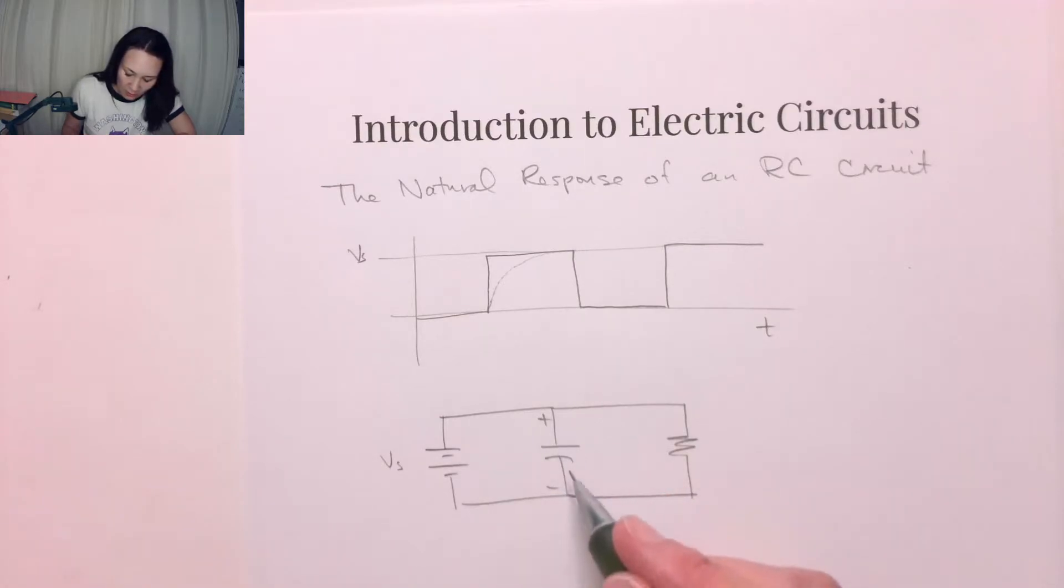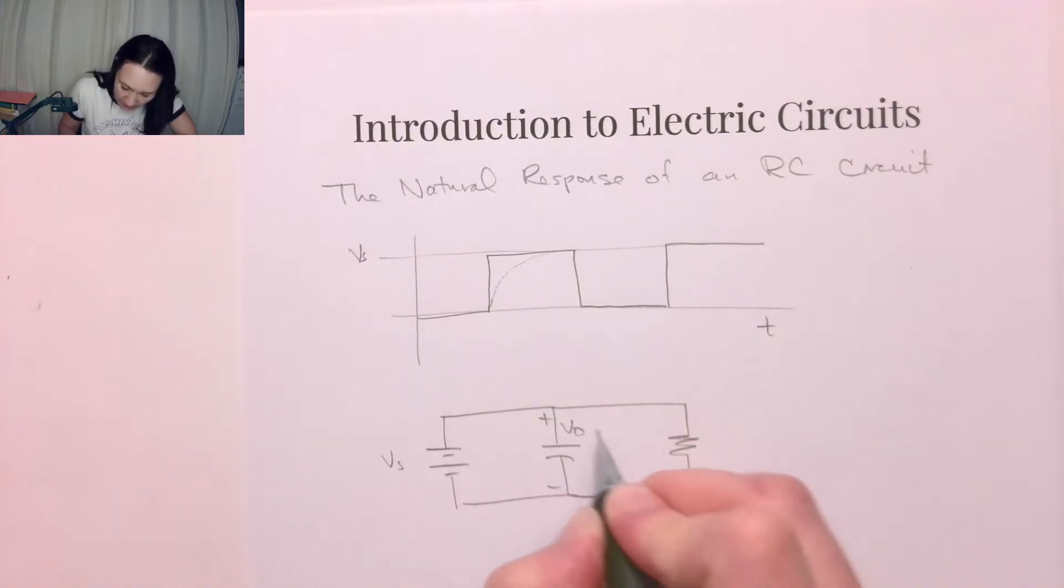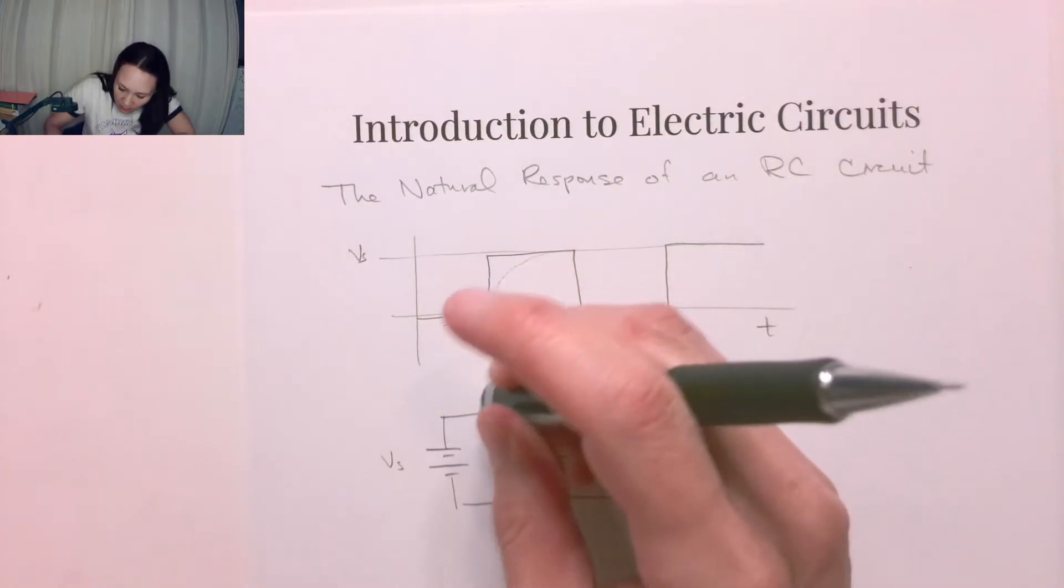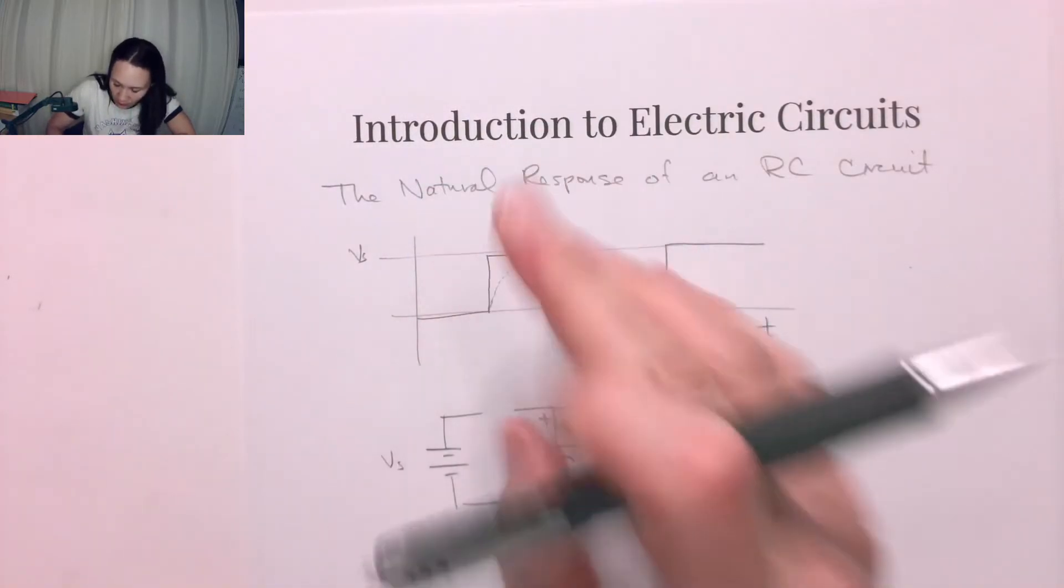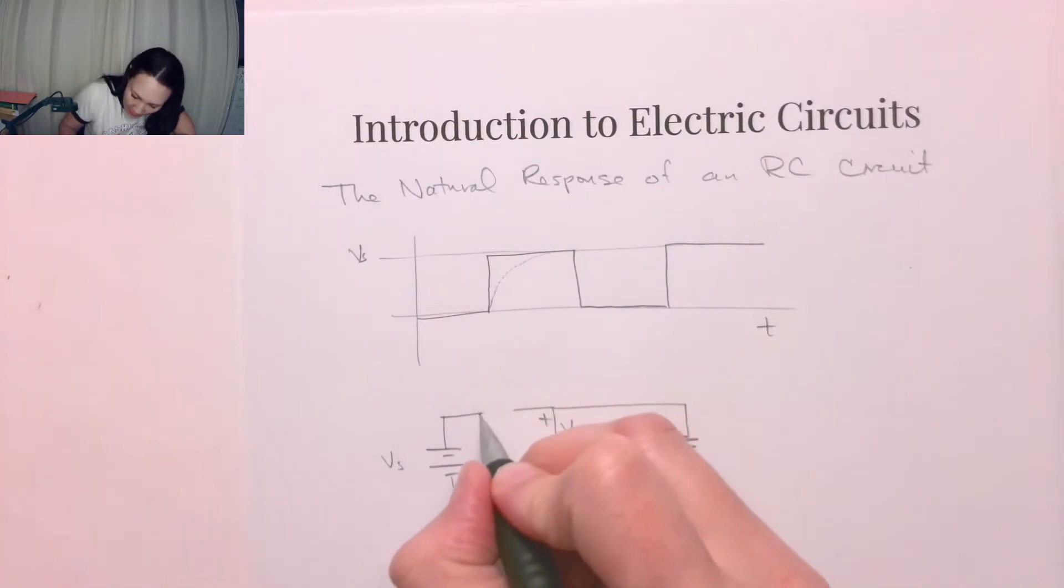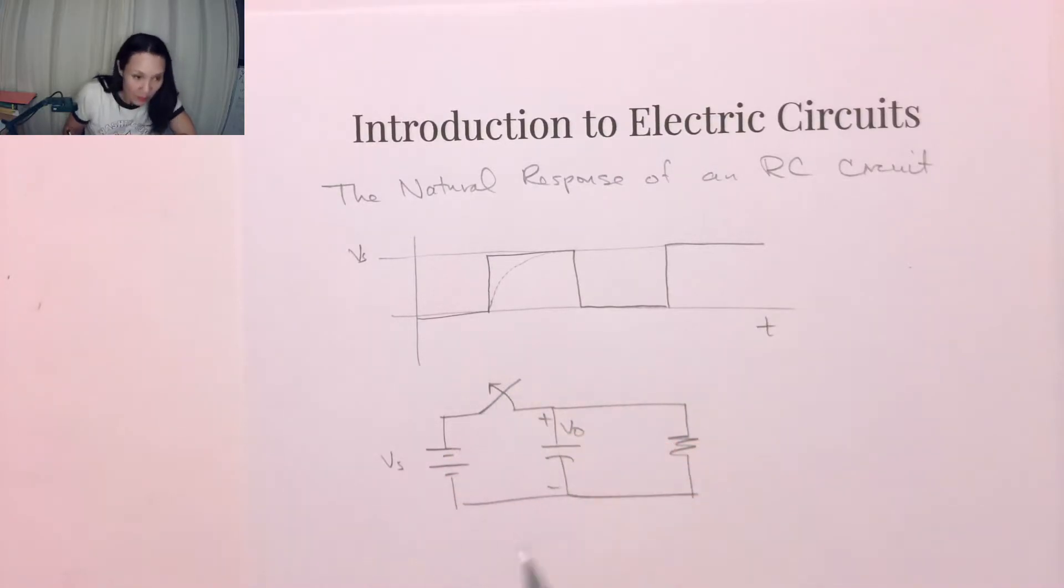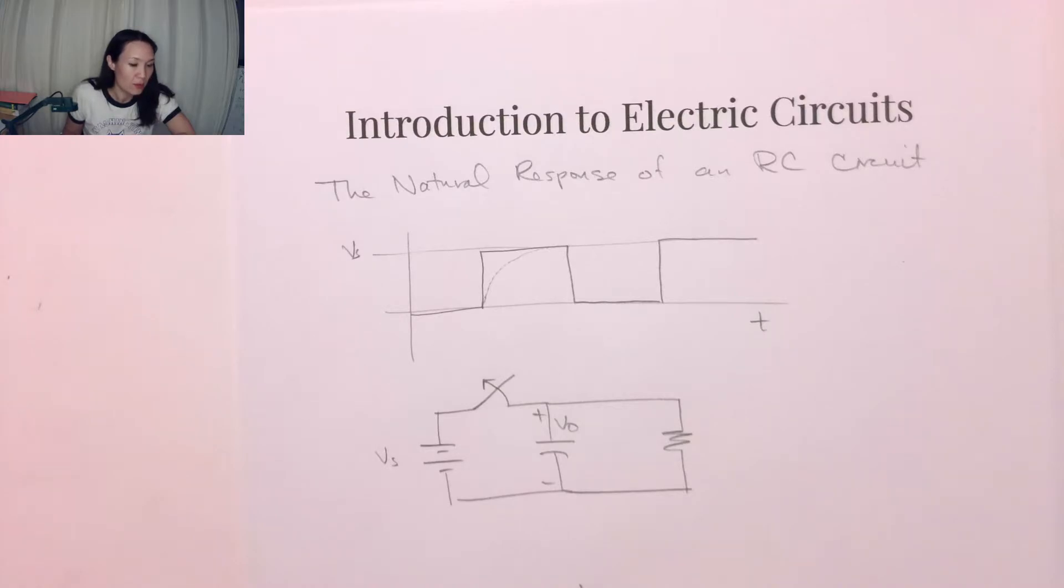If this has all the initial voltage, I'll call this Vs, the initial voltage stored on this capacitor, the natural response is what happens when, suppose at some time, we open a switch right here. In other words, we disconnect this source.